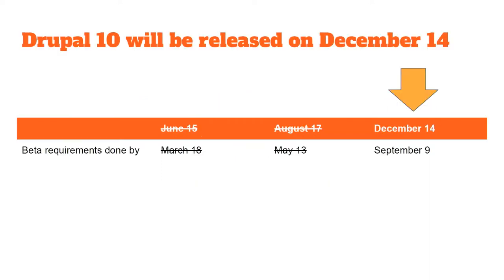Drupal 10 had three possible release dates: June 15th, August 17th, and December 14th. We defined these roughly a year ago. The thinking was that we want to have Drupal 10 out soon enough for everybody to update to, but we also want to make sure we do all the things needed to make Drupal 10 available. We defined these dates based on whether the beta requirements would be done on time — March 18th, May 13th, and September 9th. Although it's not yet May 13th, we now know things will not be ready by May 13th based on the trajectory we're going through. So the release date of Drupal 10 is going to be the last option: December 14th later this year.